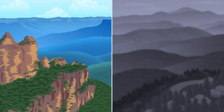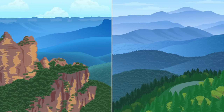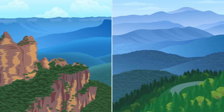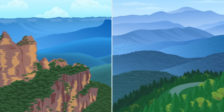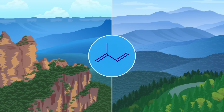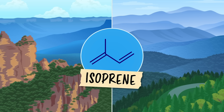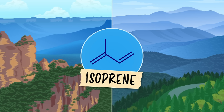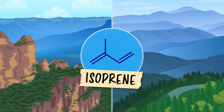Hi, I'm Deboki Chakravarti, and welcome to Crash Course Organic Chemistry. The Australian Blue Mountains and the American Blue Ridge Mountains both get their colorful names from a blue haze that blankets them on hot summer days. This haze comes from small molecules that scatter sunlight, specifically small wavelength blue light. One of these small molecules is isoprene, a volatile biogenic organic compound — an organic chemical made by living things, in this case trees, that readily evaporates into the air.